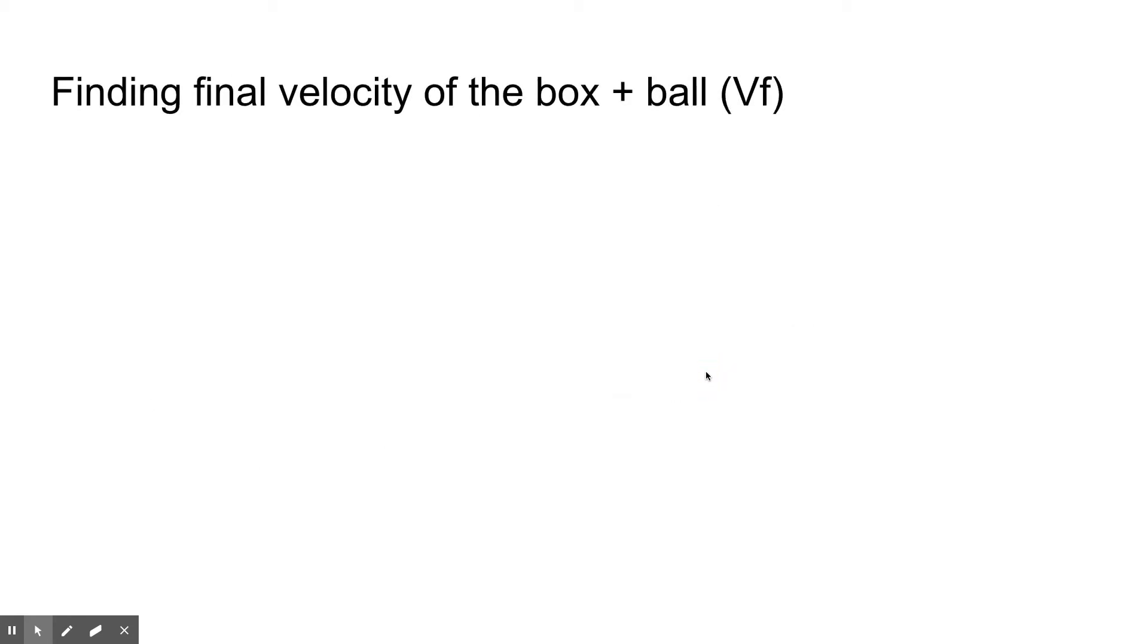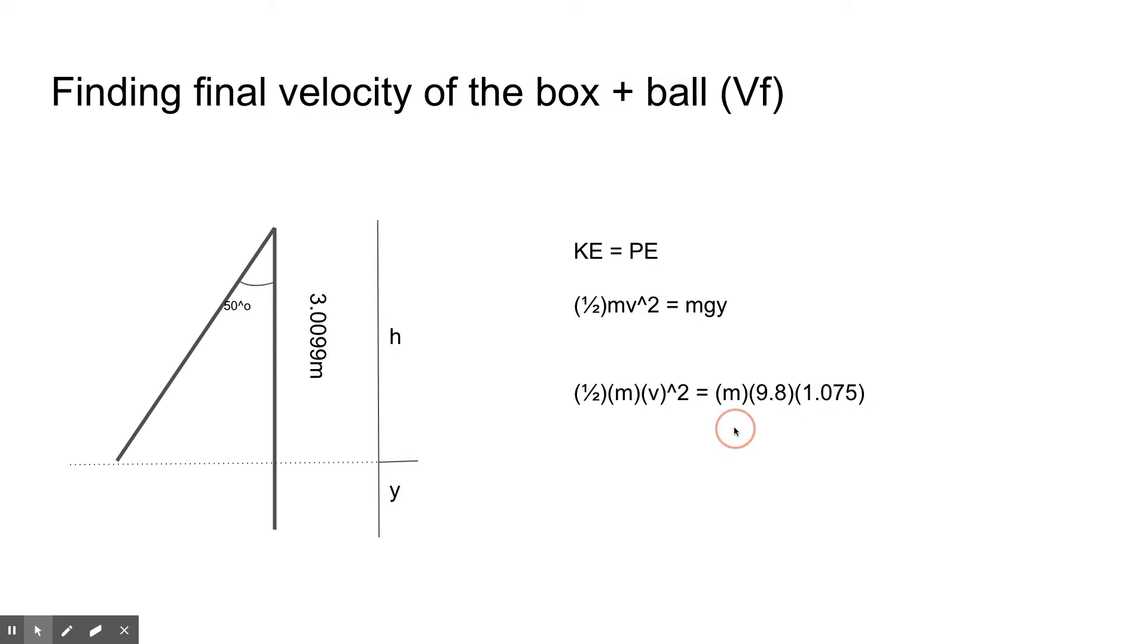We can use that to find the final velocity of the box and ball which we will later use in our conservation of momentum equation. Since we know that kinetic energy is equal to potential energy, we can write out the equation and set it up like this. This is for the box and ball contraption by the way. So we can plug in our numbers here. We don't know any of the numbers for the kinetic energy but we do know the gravitation constant and the y value that we just calculated. We can then cancel out the m values because they're going to stay the same and we get one half v squared equals 9.8 times 1.075. Calculate that out and we get the vf which is right here to be 4.59 meters per second.